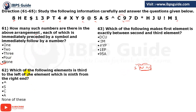Question 62: Which element is third to the left of the element which is ninth from the right? When directions are opposite — left and right — you add the numbers: 3 + 9 = 12. So we find the 12th element from the right hand side. Counting 1 through 12 from the right, the answer is the sign of power. That is option A.